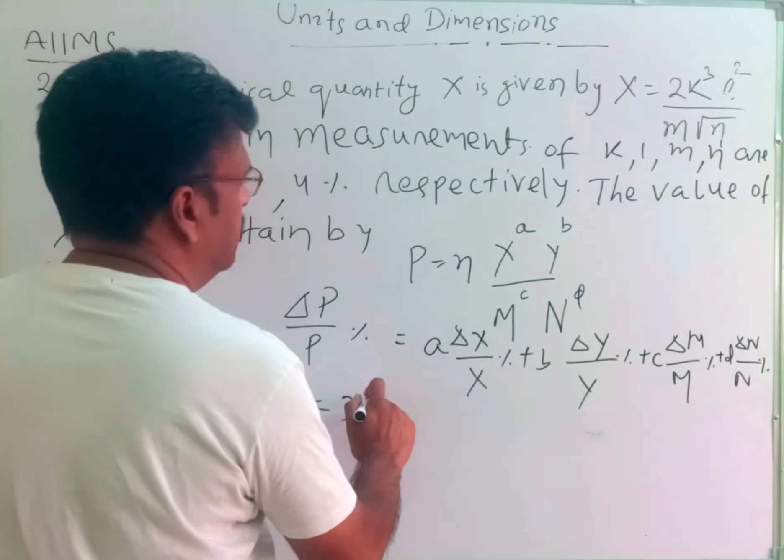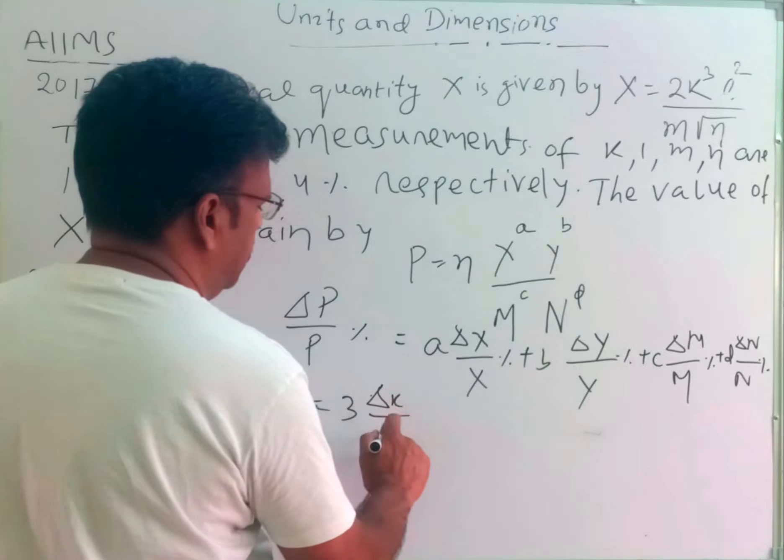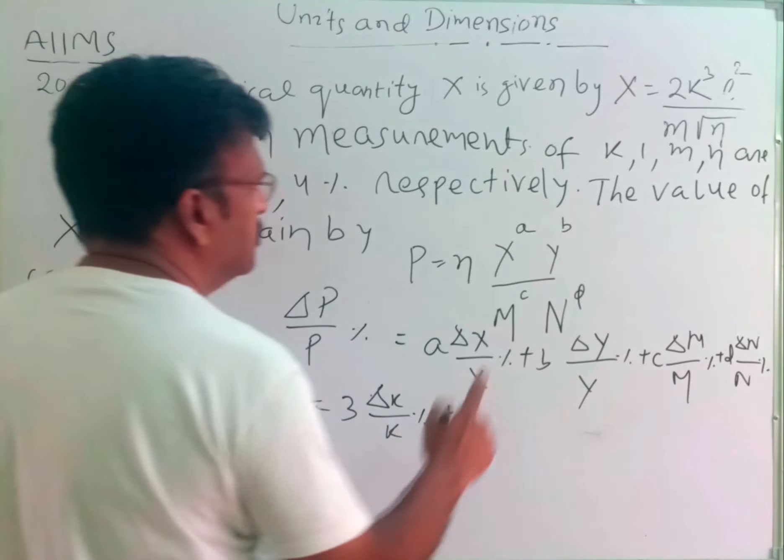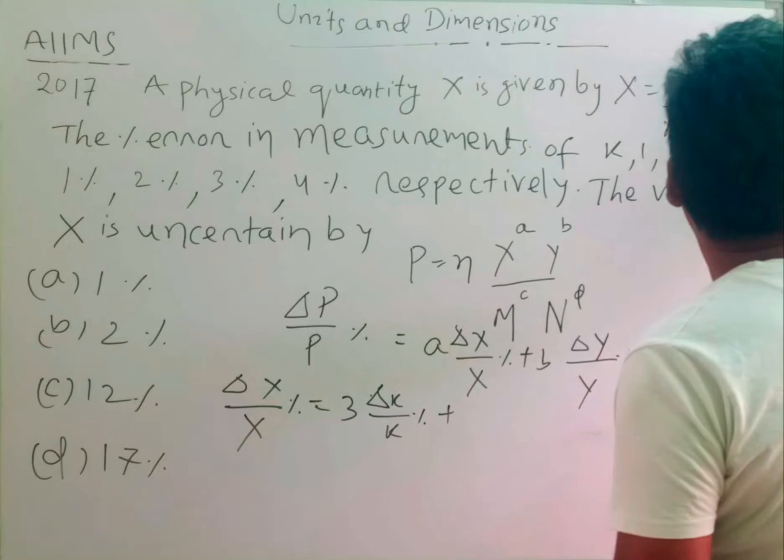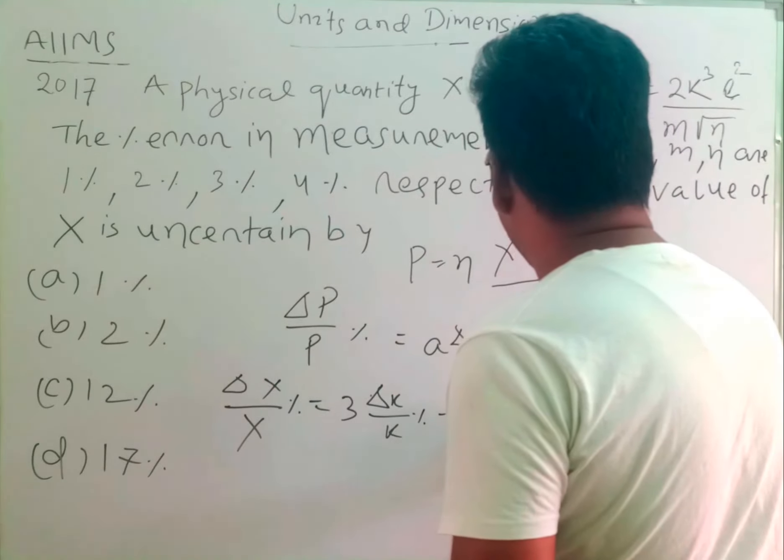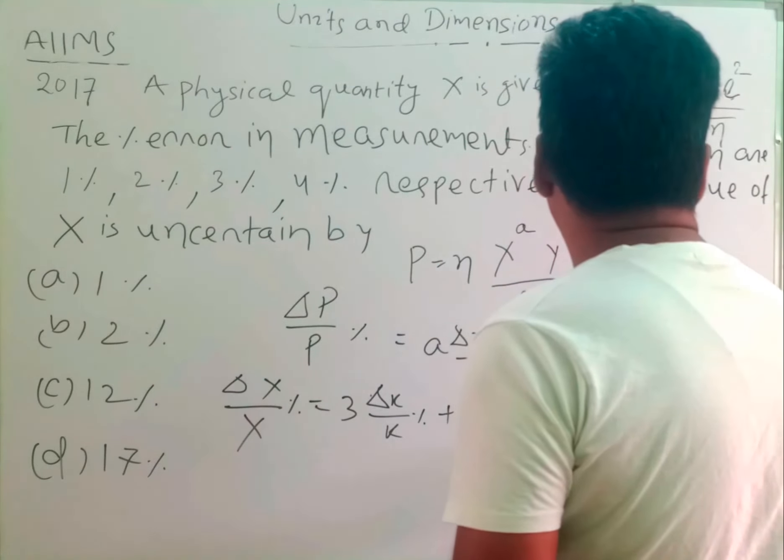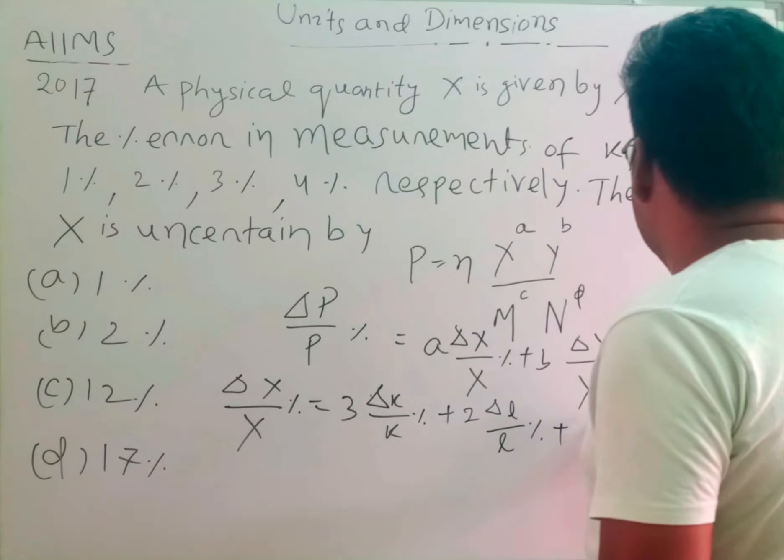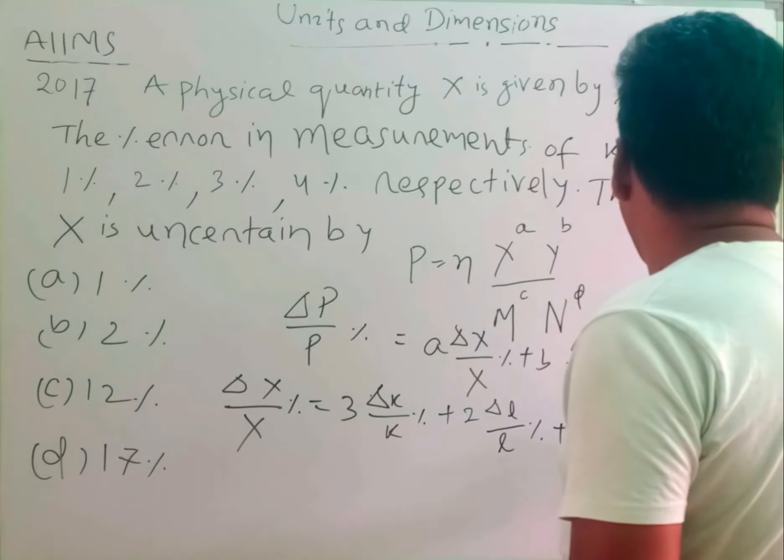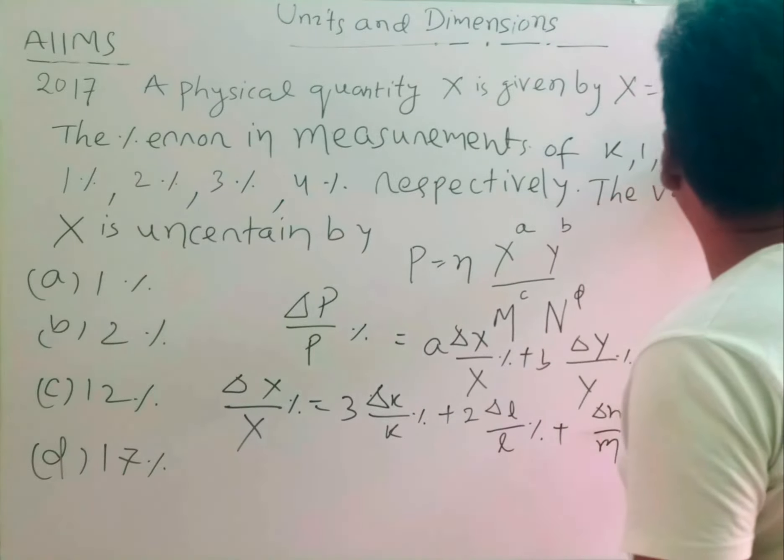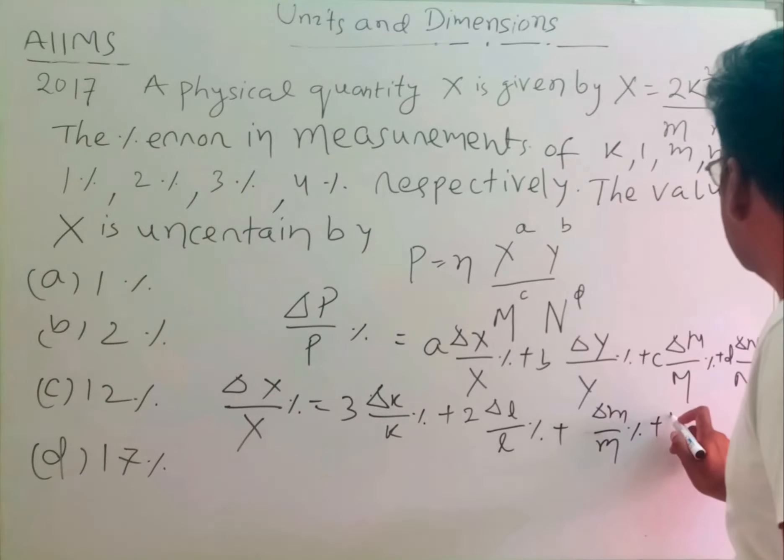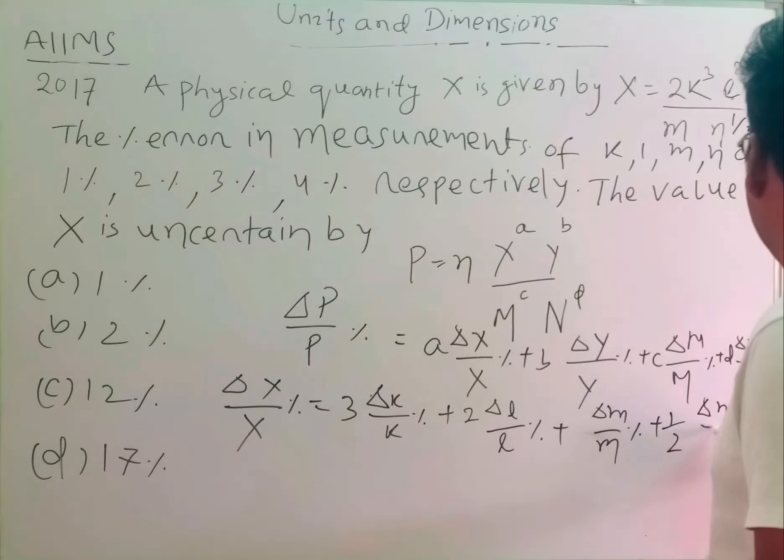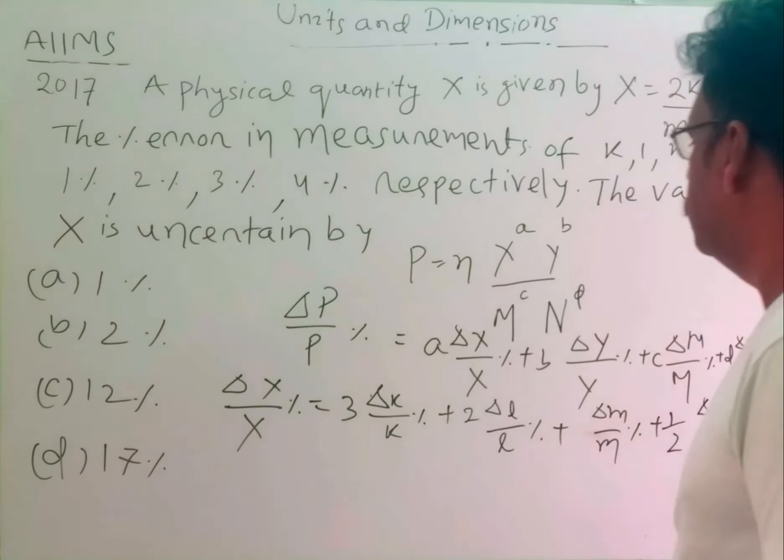So here, ΔX/X percentage will be students, how much? That will be 3(ΔK/K)% plus 2(ΔL/L)% plus (ΔM/M)% plus, this is N to the power half, root over N means N to the power half, so students, half into ΔN/N%.